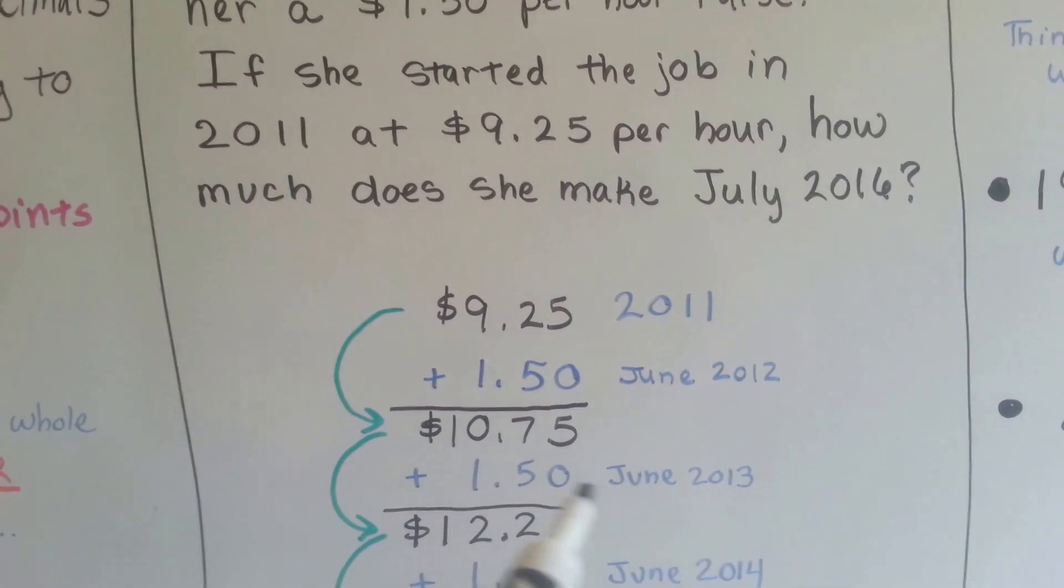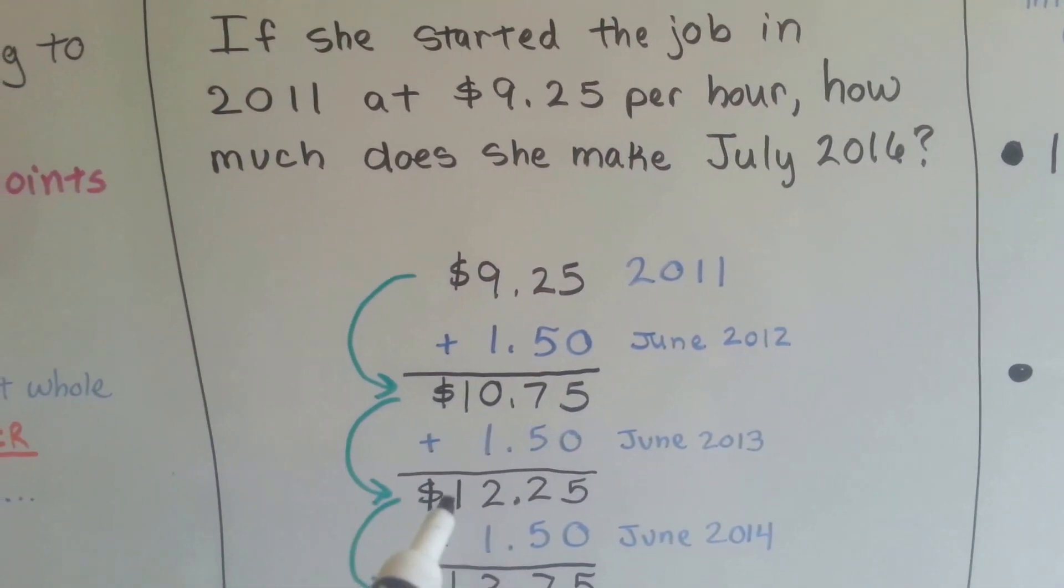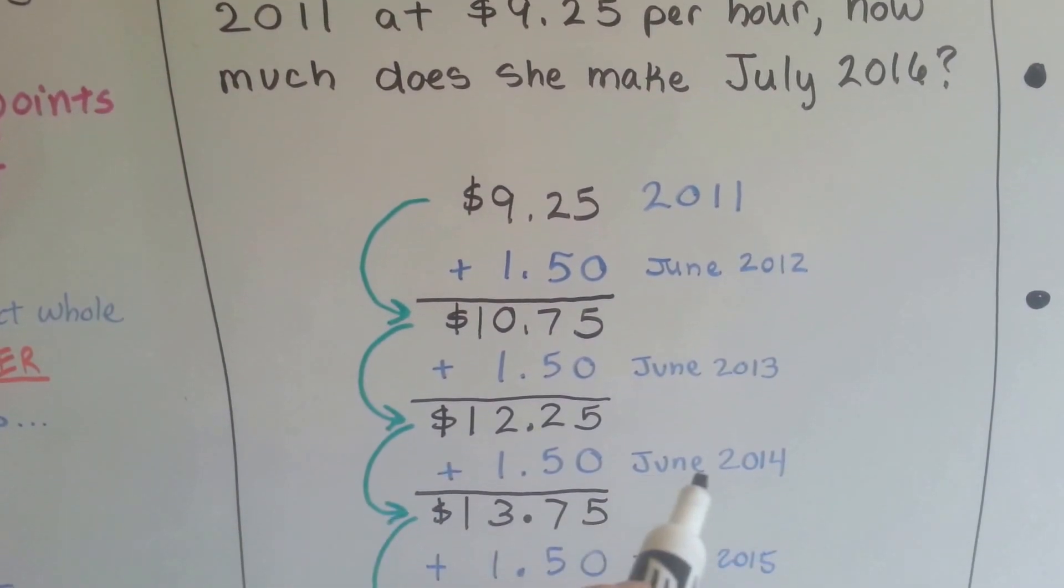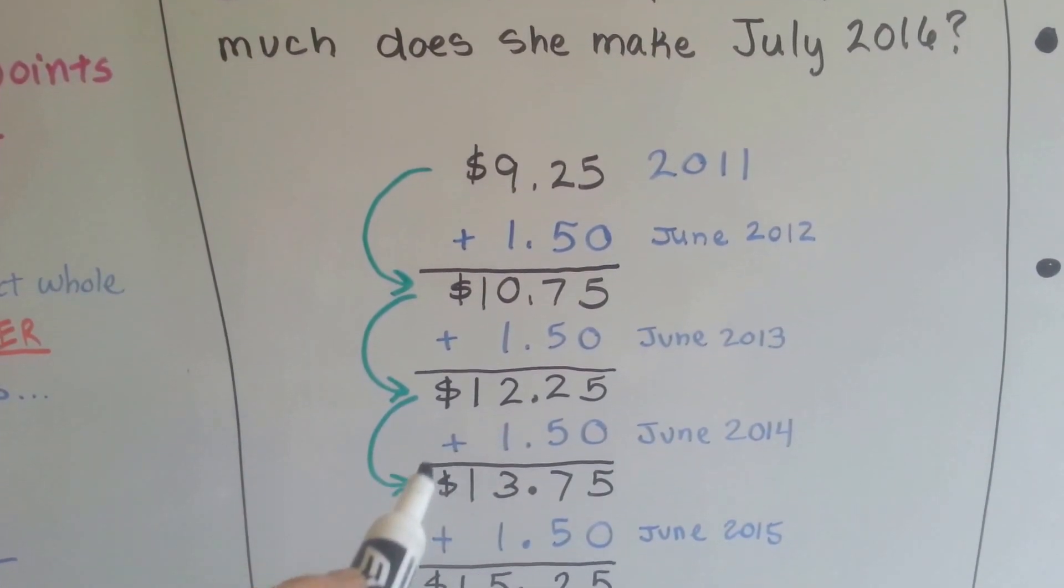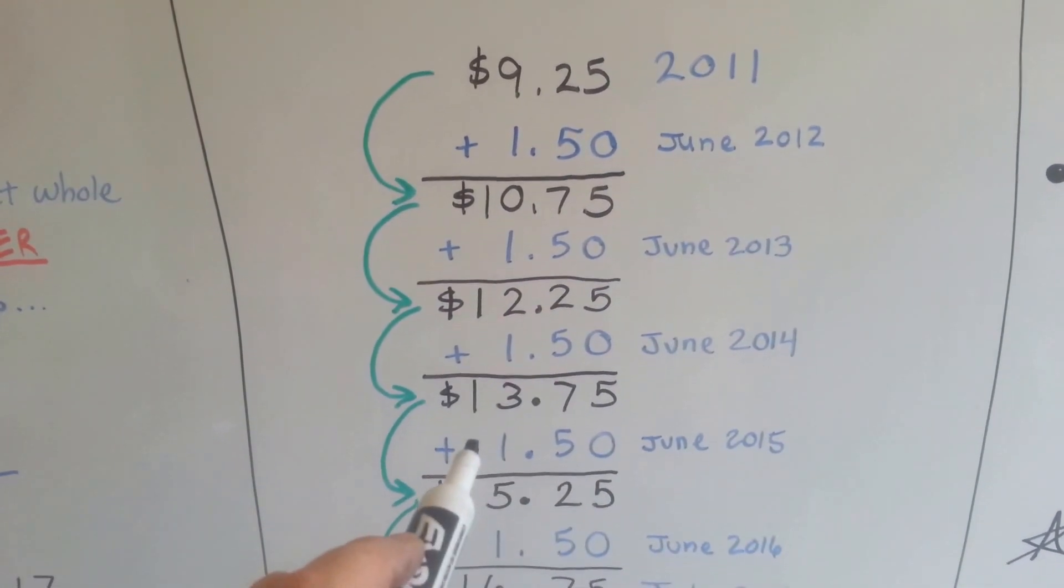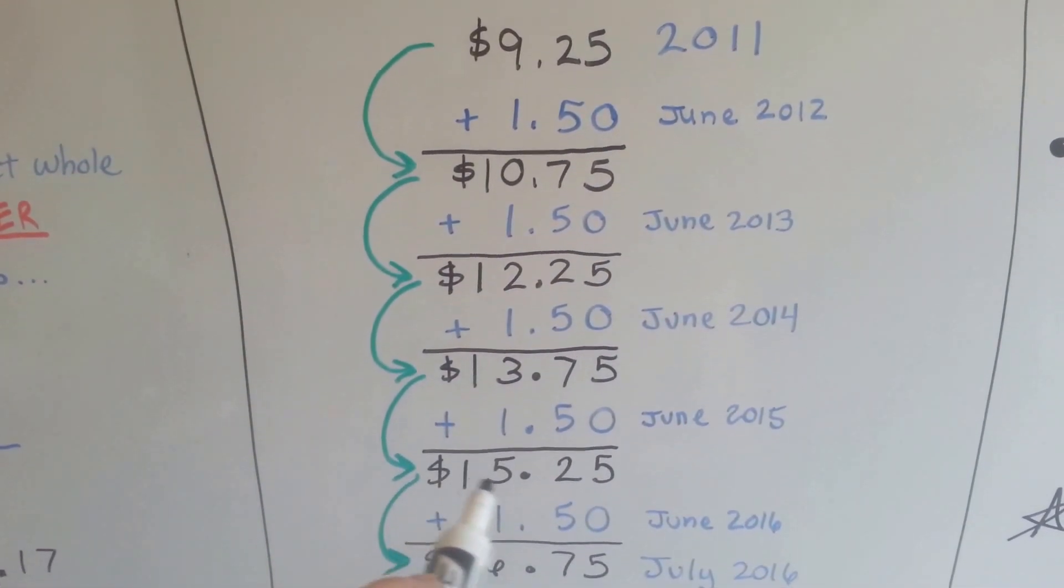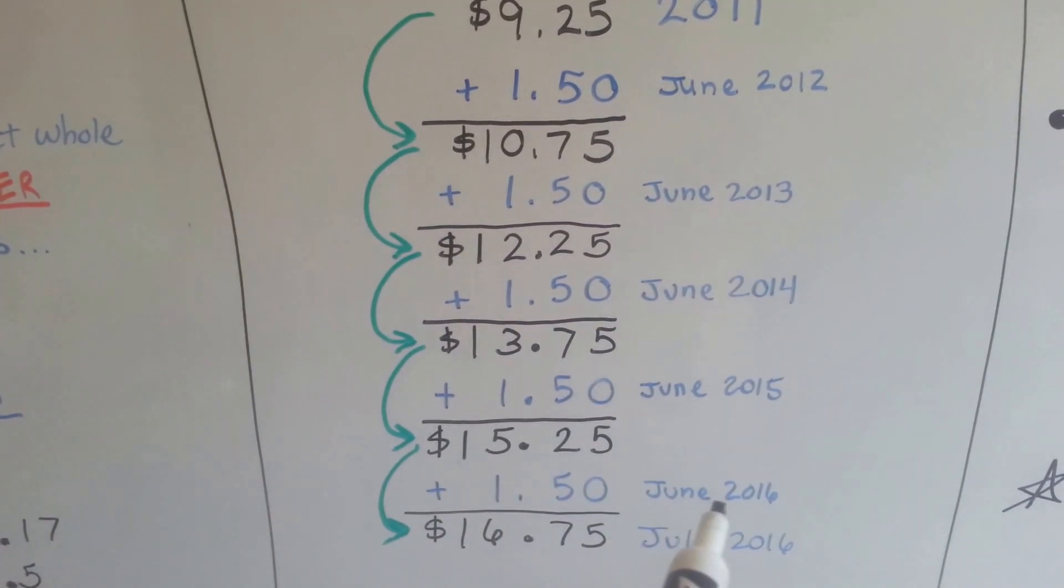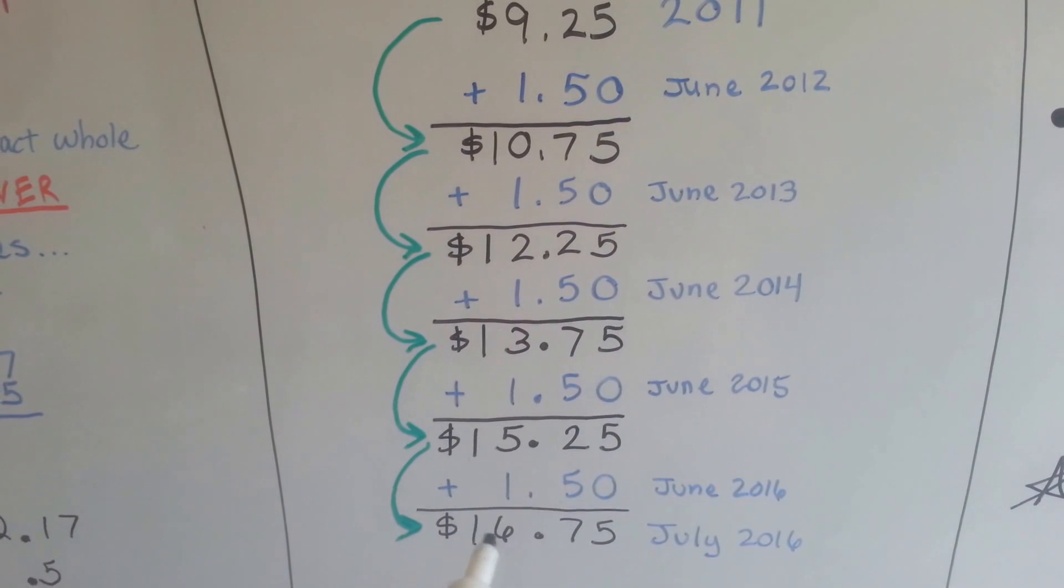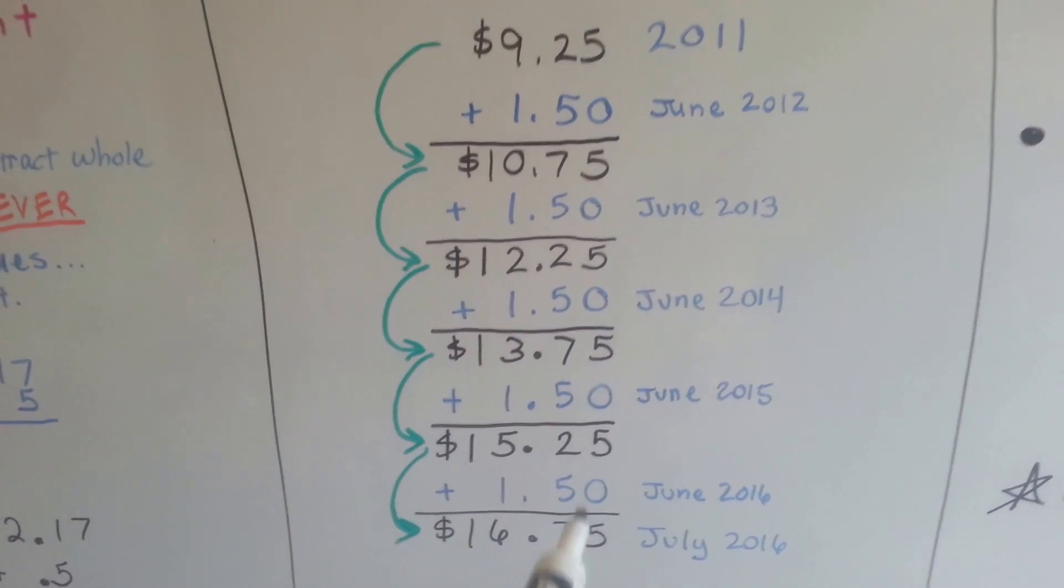In June of 2013, she got another raise and now was making $12.25. In June of 2014, she got another raise, and now she increased to $13.75. In June of 2015, she got another raise. She's at $15.25. And then in June of 2016, she got the other raise, and is at $16.75.